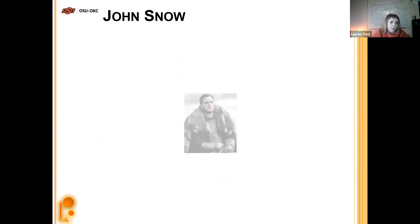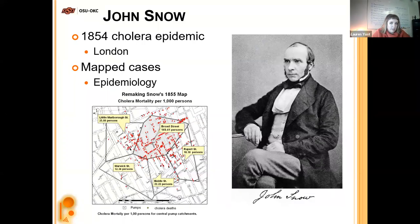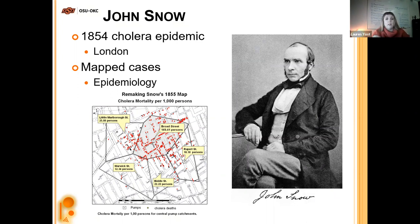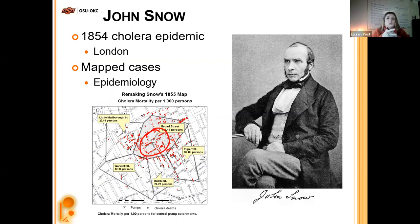John Snow — not the Game of Thrones character — was an important figure. In 1854, there was a cholera epidemic in London. He took it upon himself to map out the cases and noticed clustering around specific wells. He was able to narrow it down to a specific well, and by preventing people from using it, they were able to deal with the outbreak. This represents some of the first ideas of major epidemiology being applied.